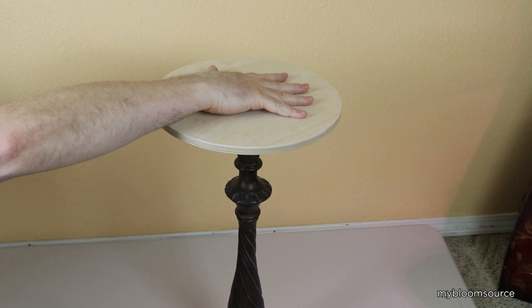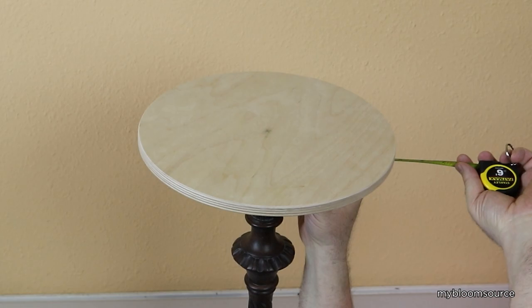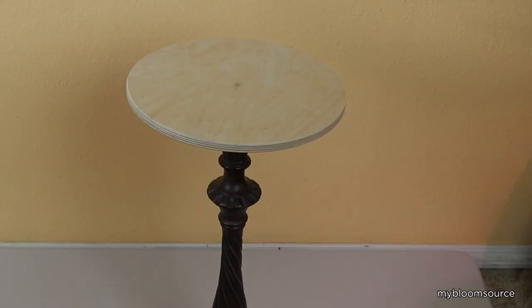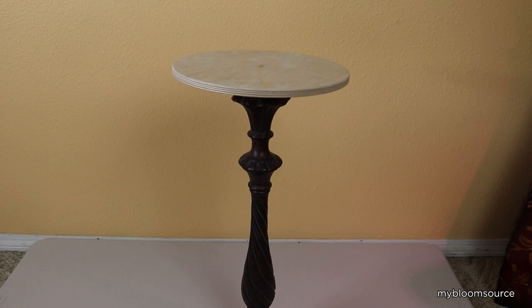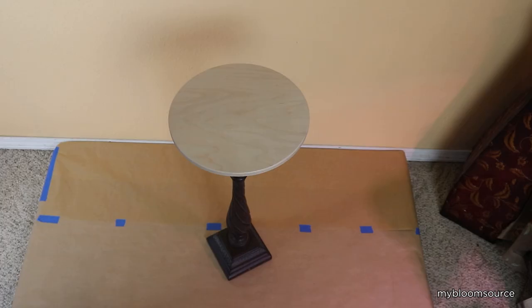Make sure the top is centered and level. Let the adhesive dry per the manufacturer's instructions. After the adhesive is fully cured you can now apply stain or paint to the wooden top.